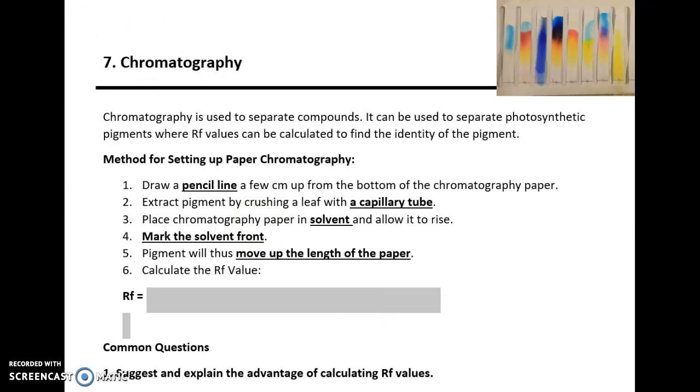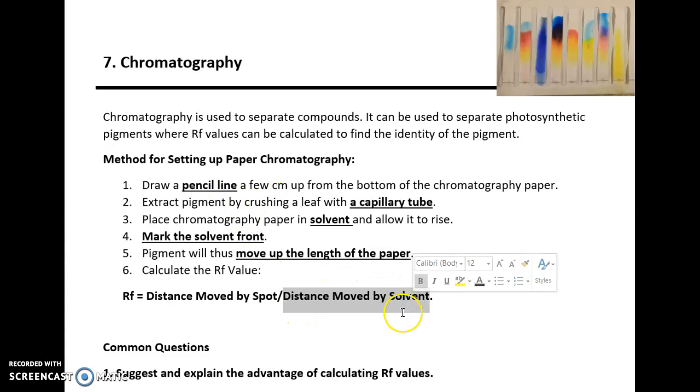An RF value can thus be worked out by finding the distance that is moved by the spot (the pigment or whatever was put on in the middle of the pencil line) and the distance that the solvent moved. So distance moved by spot divided by distance moved by solvent. This is effectively a ratio, the ratio of the distance moved between the spot to the solvent.